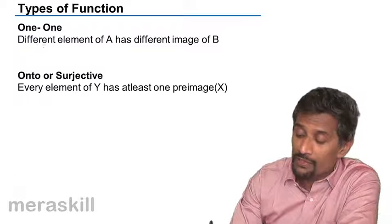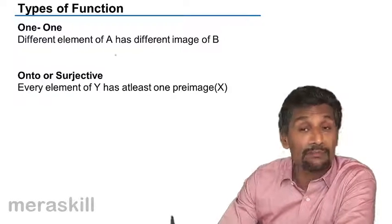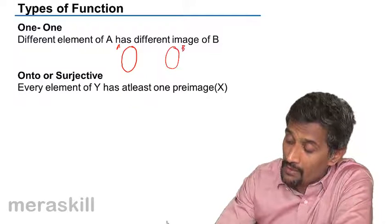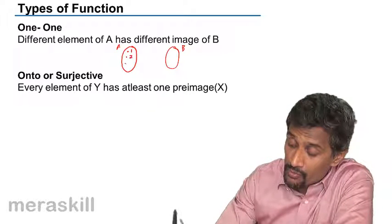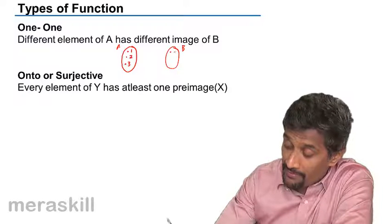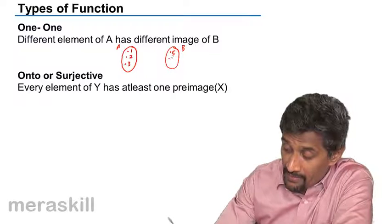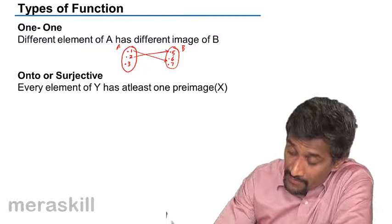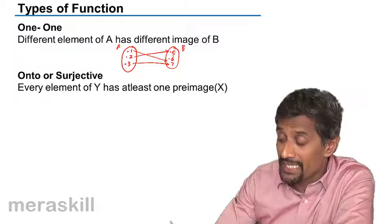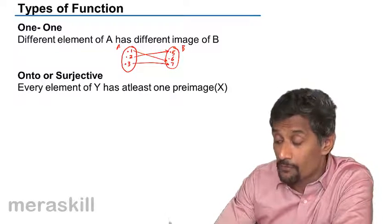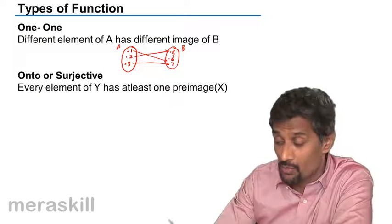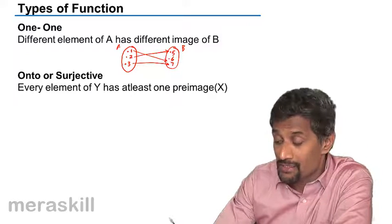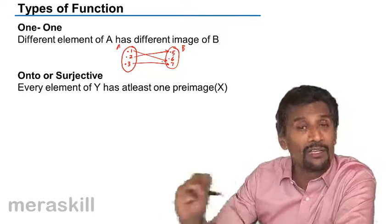What is a one-to-one (1,1) function? Different elements of A have different images in B. Suppose you have set A with elements 1, 2, 3 and set B with elements 5, 6, 7. So 1 maps to 6, 2 links with 5, and 3 to 7. For each pre-image there is a definite image, and for every image there is a definite pre-image — one and only one image and pre-image combination. Then we call it a one-to-one relationship.